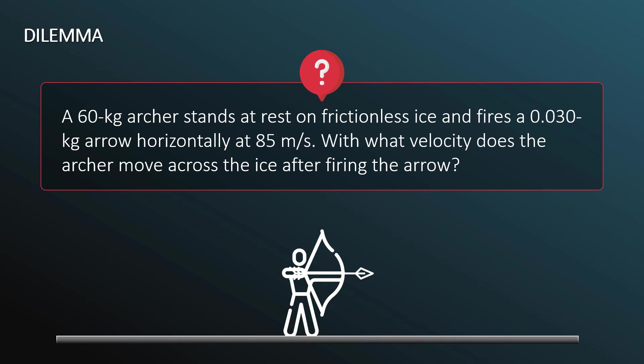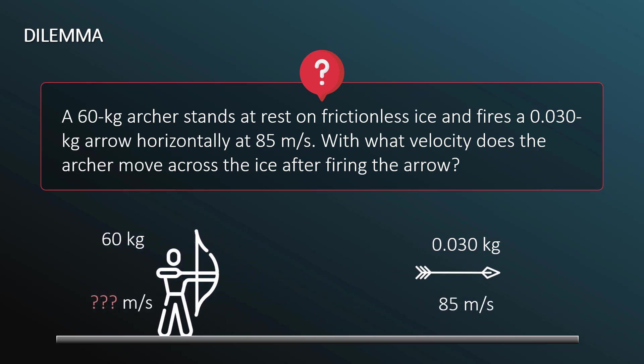Here is our situation. The archer is 60 kilograms, the arrow is 0.030 kilograms. The archer starts at rest, and the arrow starts at rest. Then the archer fires the arrow, and the masses remain the same. Now the arrow has a velocity of 85 meters per second to the right, and the archer has some unknown velocity to the left. With the tools we have at our disposal now, we can't solve this problem, so we need to introduce some other tools.